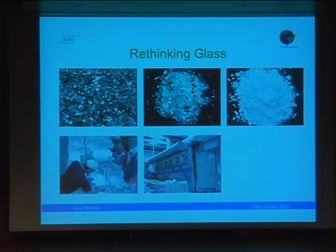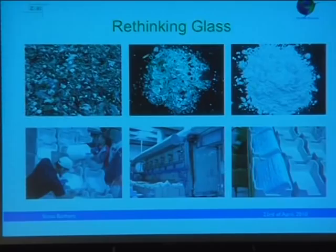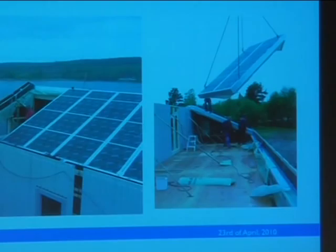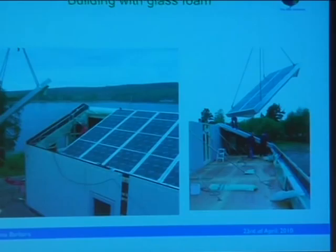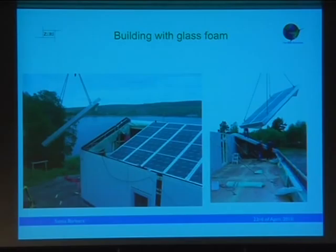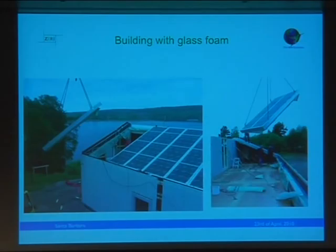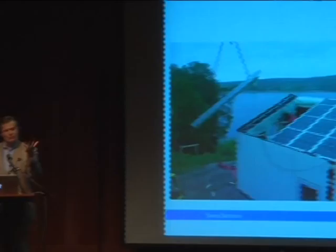Here we are injecting CO2 into what was called unrecyclable glass — green, brown, and white mixed together. You can see the machine from Albuquerque, installed by Earthstone on the landfill, producing glass foam. Glass foam can be used to build houses. Taking glass — which, like aluminum, has a lot of embedded energy — and reconverting that embedded energy by injecting CO2 into a structural building material that replaces steel, reinforced concrete, and cement.